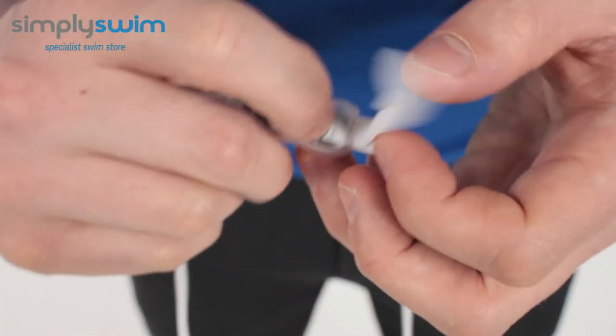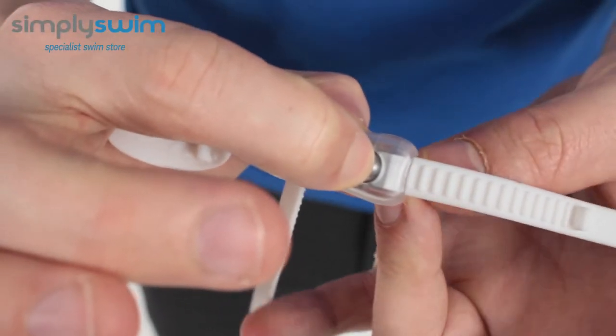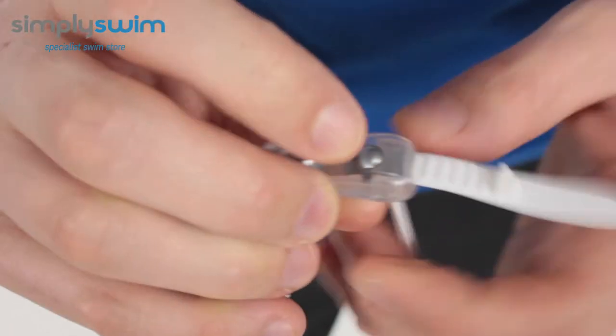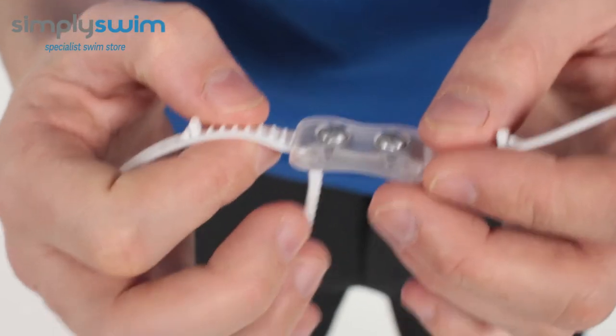To loosen them up, you just literally push down on the gray bit, and hey presto! Nice and easy to use, really quick fast adjustment on there, so you can get a nice perfect hold of the goggle on your face.